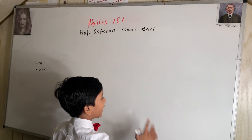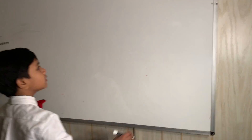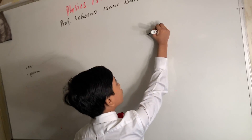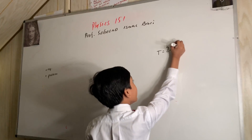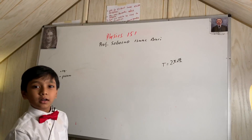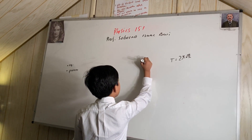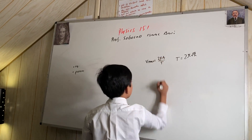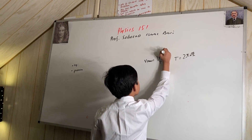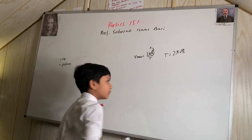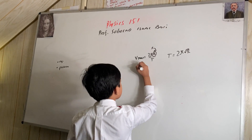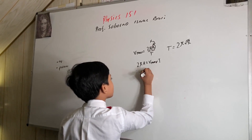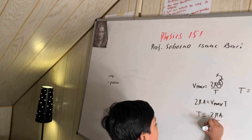Let's start with our equation of the day. You know T equals 2π times the square root of m over k, right? If not, I'm going to teach you where this comes from. V max is equal to 2πa over T, or the period. Usually this would be x but since this is the maximum we have to use a. So that means 2πa equals V max times T, or in other words T equals 2πa over V max.